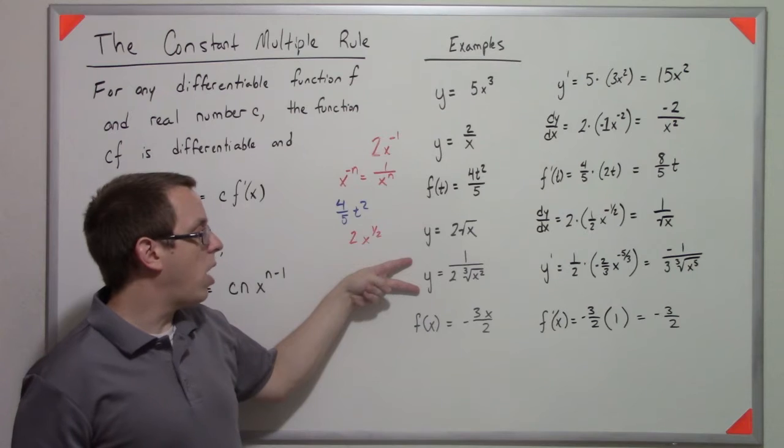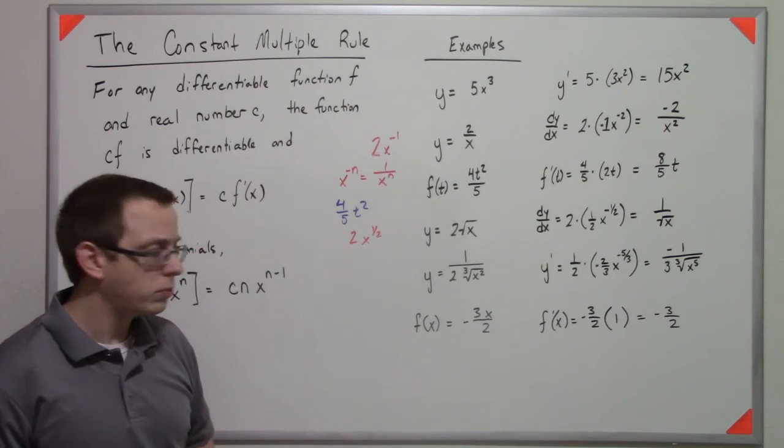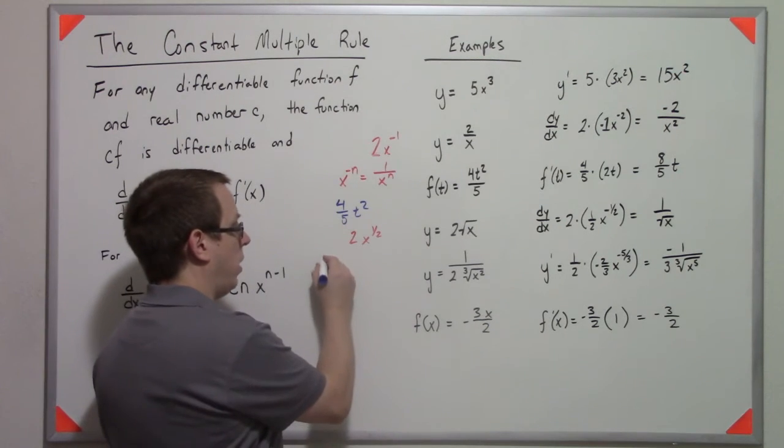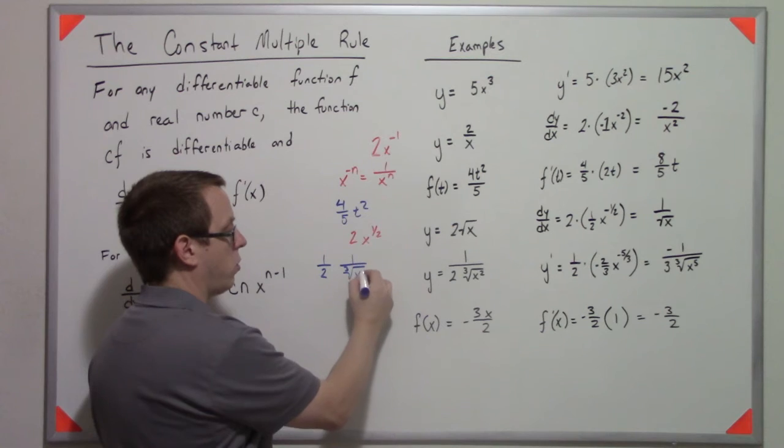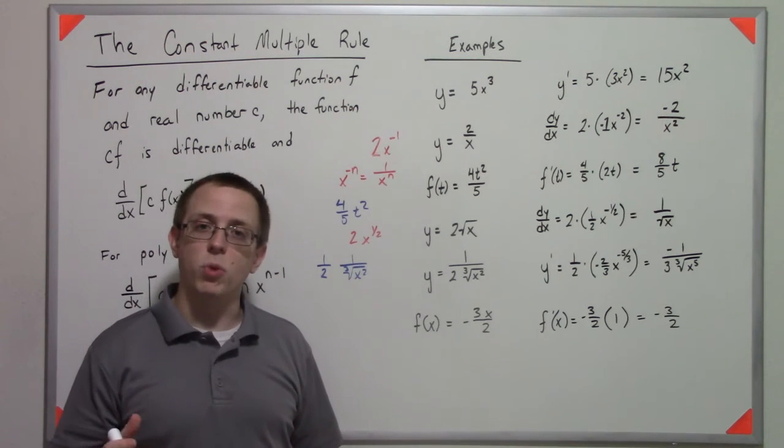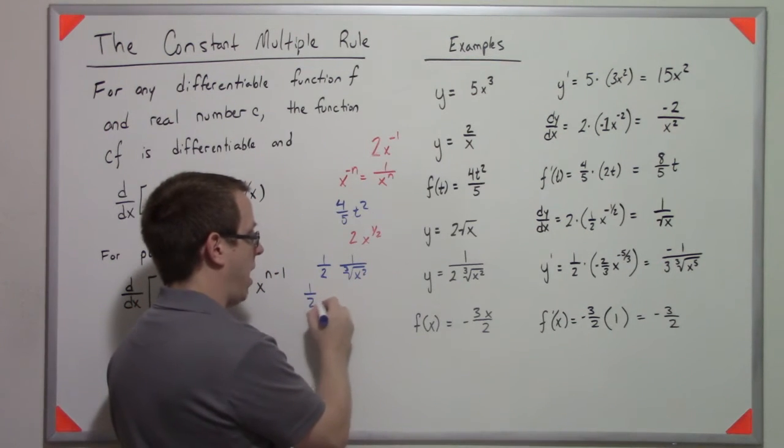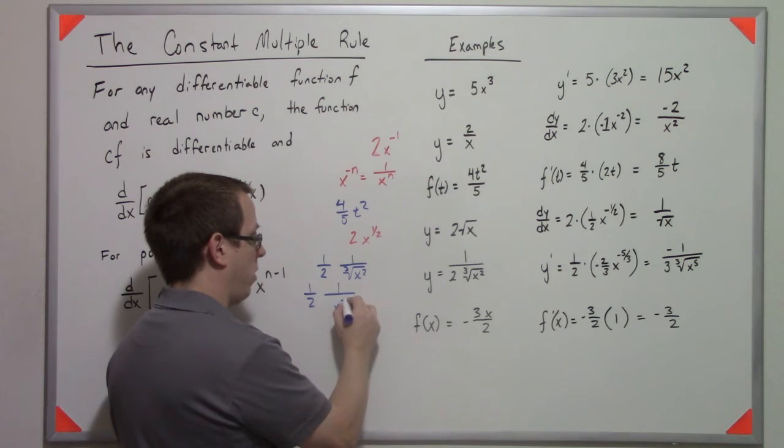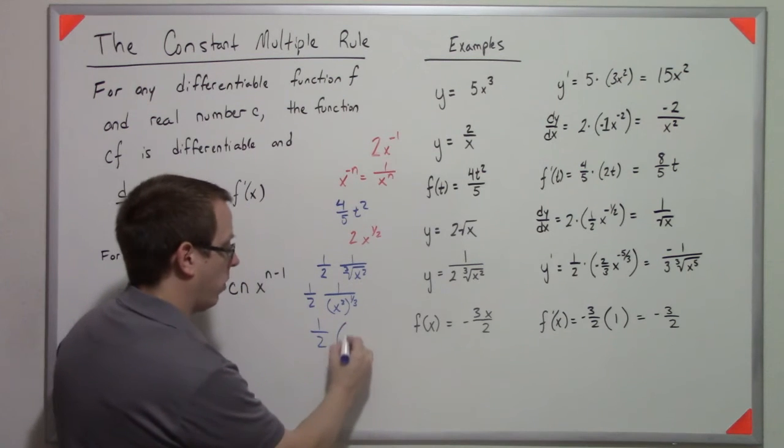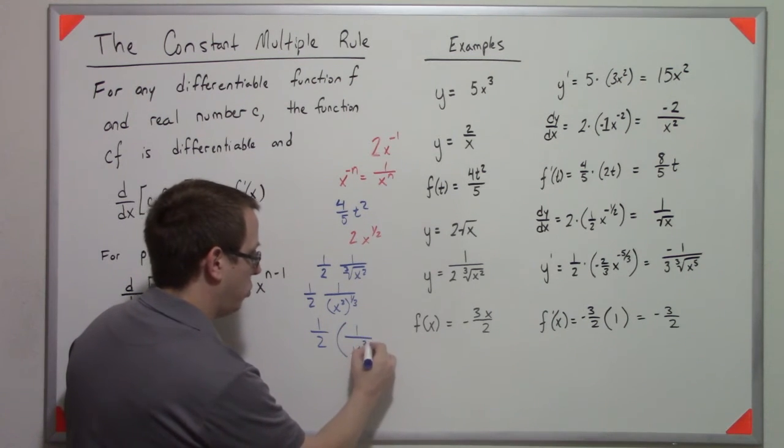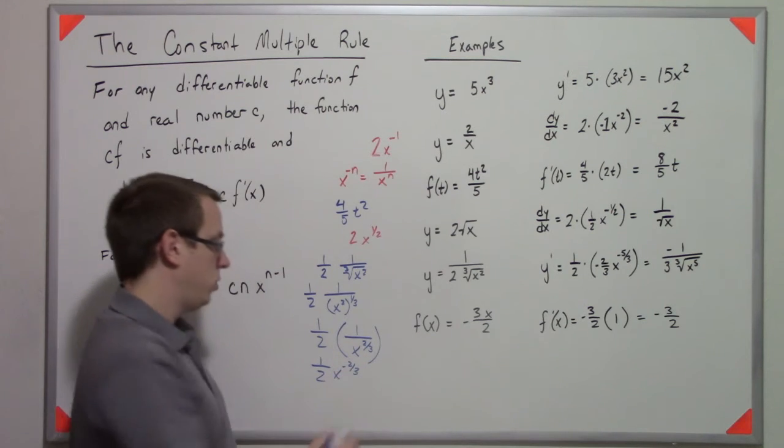Next, we have y equals 1 over 2 cube root x squared. Okay, so that one's a little trickier. What we can do first is bring it as 1 half, and then we have 1 over the cube root of x squared. But remember that the cube root can be written as a power of 1 third. So that's like 1 half 1 over x squared to the 1 third. That's really 1 half times 1 over x to the 2 thirds. And then we can rewrite that as 1 half x to the negative 2 thirds.